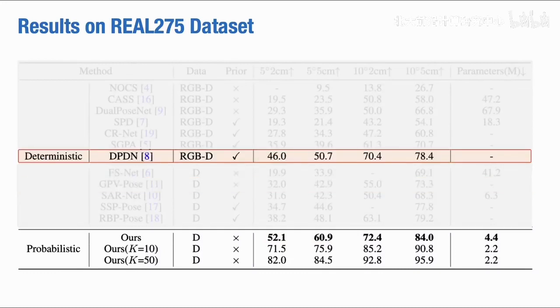Even compared with state-of-the-art method DPDN, which utilizes RGBD and shape prior as inputs, our method still shows great advantages. We take lead in 5 degrees 2 cm and 5 degrees 5 cm with 6% and 10% increments respectively.